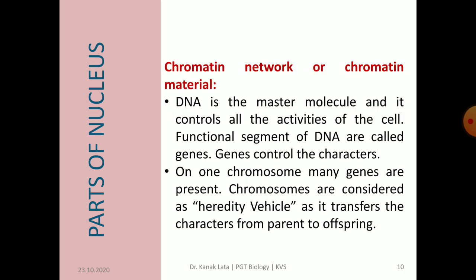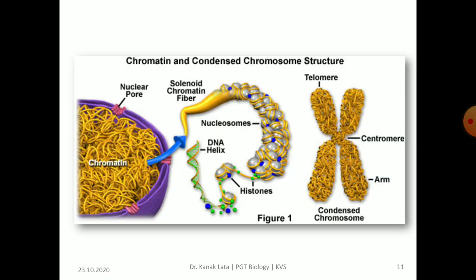As we know, DNA is the master molecule and it controls all the activity of the cell. Segments of DNA are called genes, and genes are the units of hereditary character that transfer from parent to offspring. On one chromosome, many genes are present, so chromosomes are also called the hereditary vehicle. You may observe in the given figure the chromatin and condensed chromosome structure.